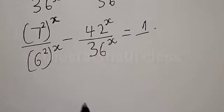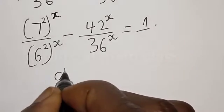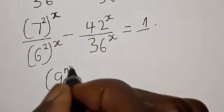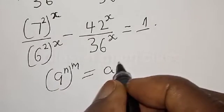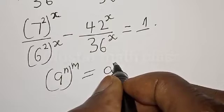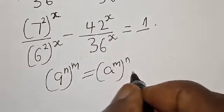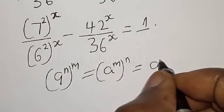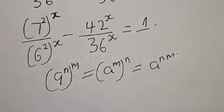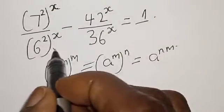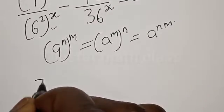Remember, if you have a raised to power n, raised to power m, that is equal to a raised to power n multiplied by m. Therefore, this becomes 7 divided by 6, raised to power s.